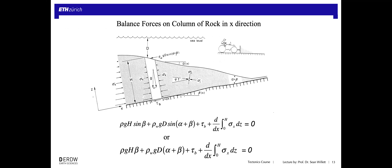Here's our theory. What we'd like to do is a force balance — just like a mass balance. We're going to look at the forces acting on a column of rock. If we orient our X and Z axes such that the column of rock goes in the Z direction, it's going to be tilted with angle beta — the tilt of the basal detachment of our wedge. We define beta for the basal slope and alpha for the surface slope, and we assume those are constant. The taper angle is alpha plus beta.